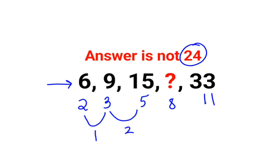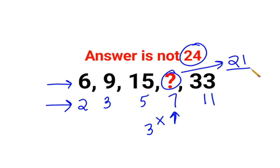So now if you look closely at all these numbers, all of them are prime numbers. The next number which comes after 5 is 7, so we should multiply 3 and 7, and the answer for this question mark is supposed to be 21.